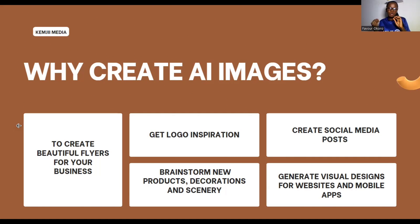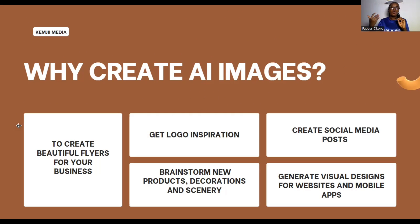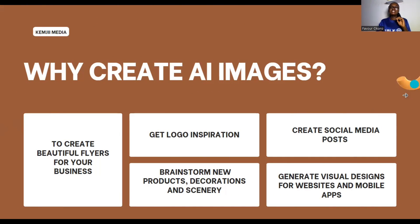You can use AI to brainstorm new products, decorations, and scenes. This works for filmmakers, product designers, and interior decorators — if you have a creative block, AI can help you come up with new ideas for your product, a new space you're designing, or a location for your new movie. Lastly, AI can help you generate visual designs for your website and mobile apps, and you can do all of this for free.